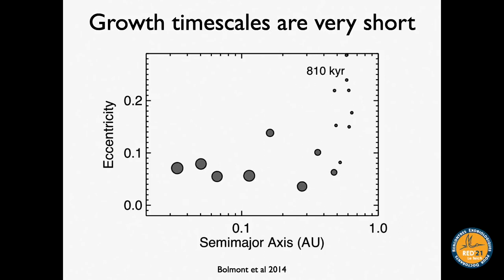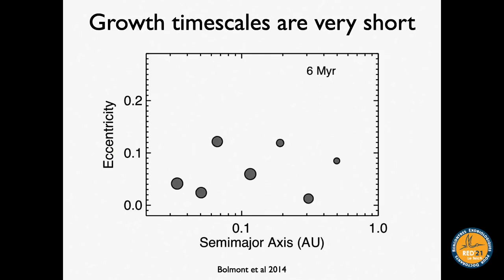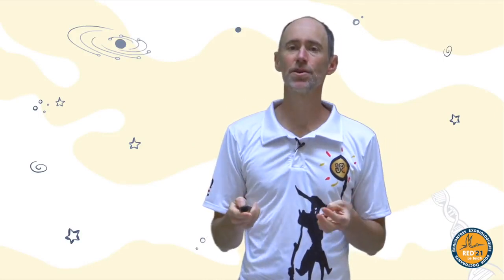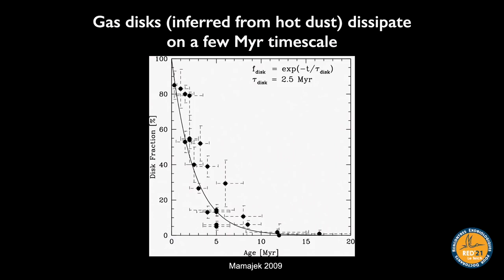Within about 100,000 years the planet formation is essentially over. The masses of the planets at the end are all a few Earth masses or so. This tells us that the action close in happens fast — things grow really fast close to their stars.